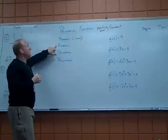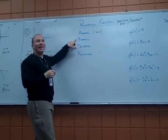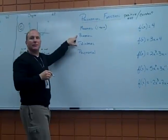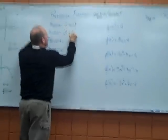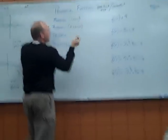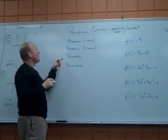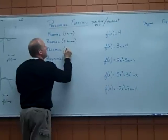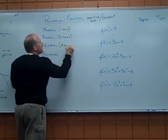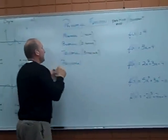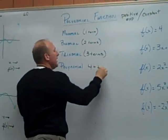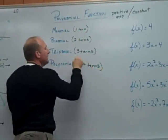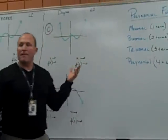That's a monomial. Guess how many terms there are in a binomial, like a bicycle? Two. So I'd have two terms, either a plus or a minus in between those. Trinomial, obviously, three terms. And for our purposes, if we have four or more terms, we're just going to narrow it down to a polynomial.